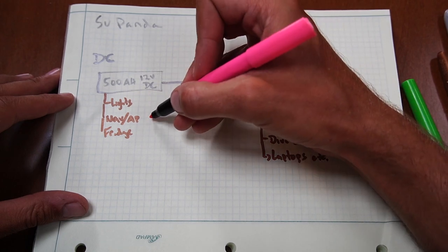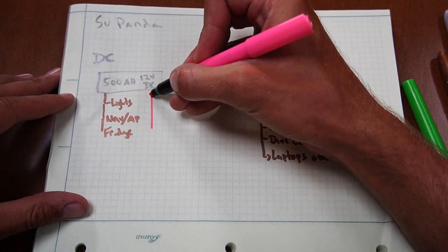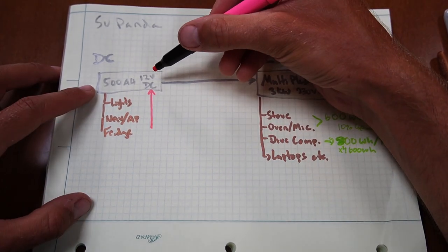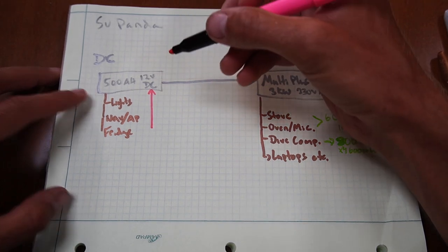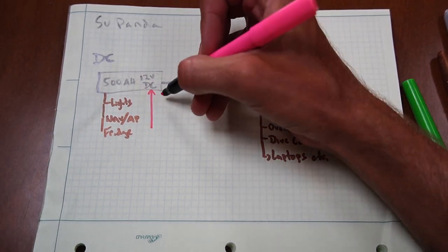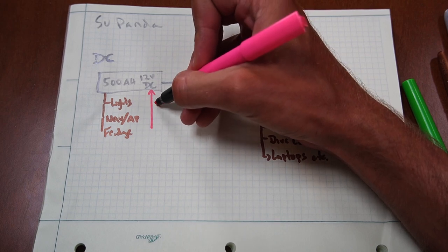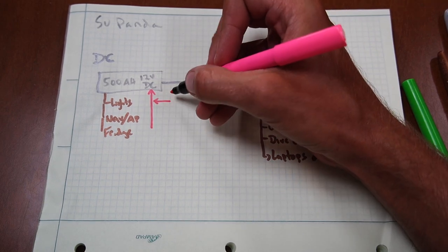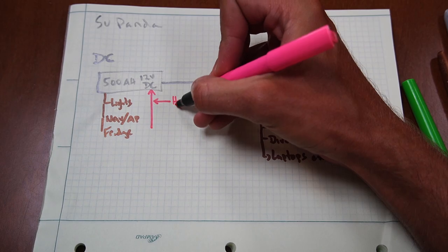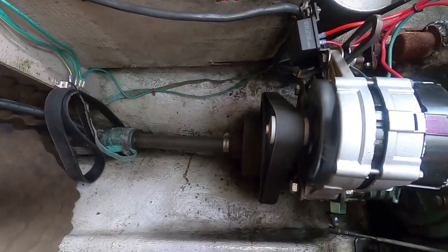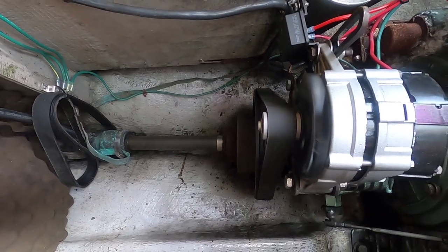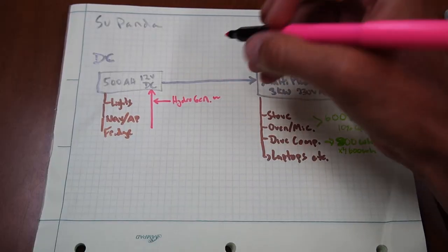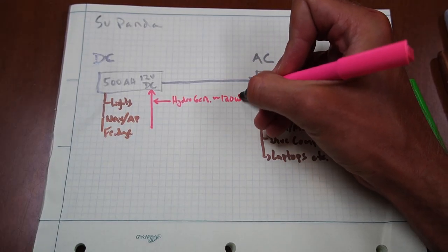We have three main energy sources coming into or charging our battery bank directly. Those sources are, let's start with small to large. So small, we have a hydro generator. That only works when we're sailing. It's powered off the prop shaft. And when it's powered, I'll say it averages about 120 watts. So it's minor, but anything can help.